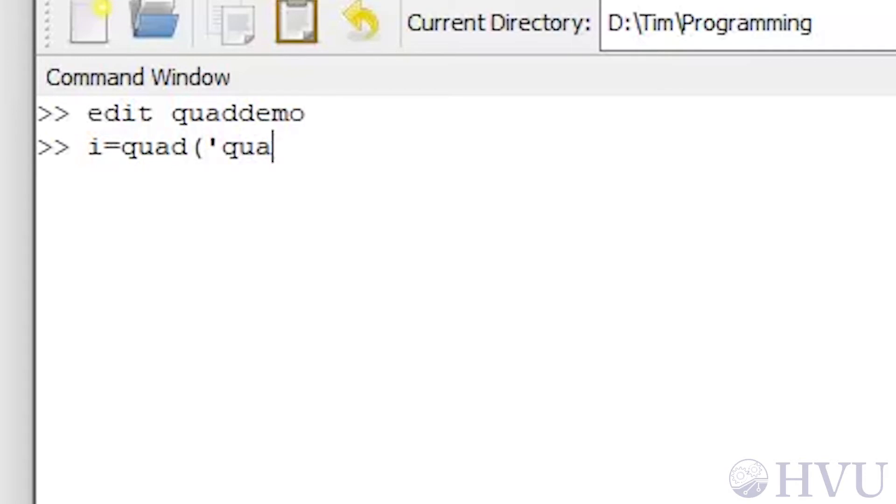The first argument to the quad function is the name of the M file containing the function in single quotes. The second and third arguments are the lower and upper limits of integration, zero and one. The quad function returns a value that's indistinguishable from the exact solution.